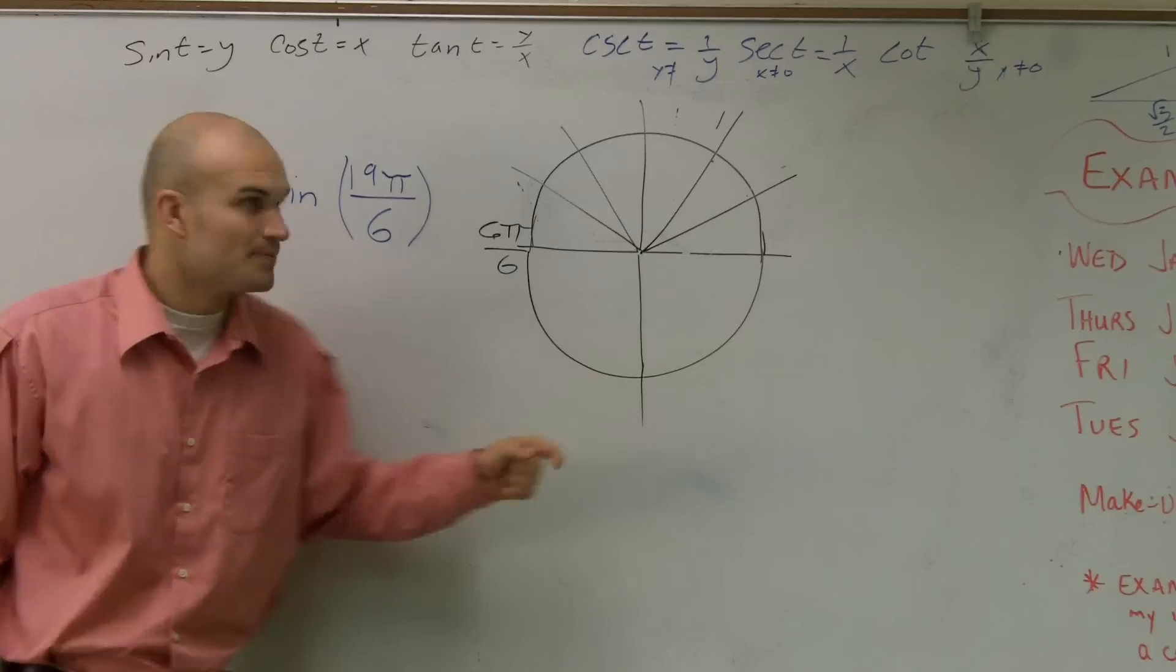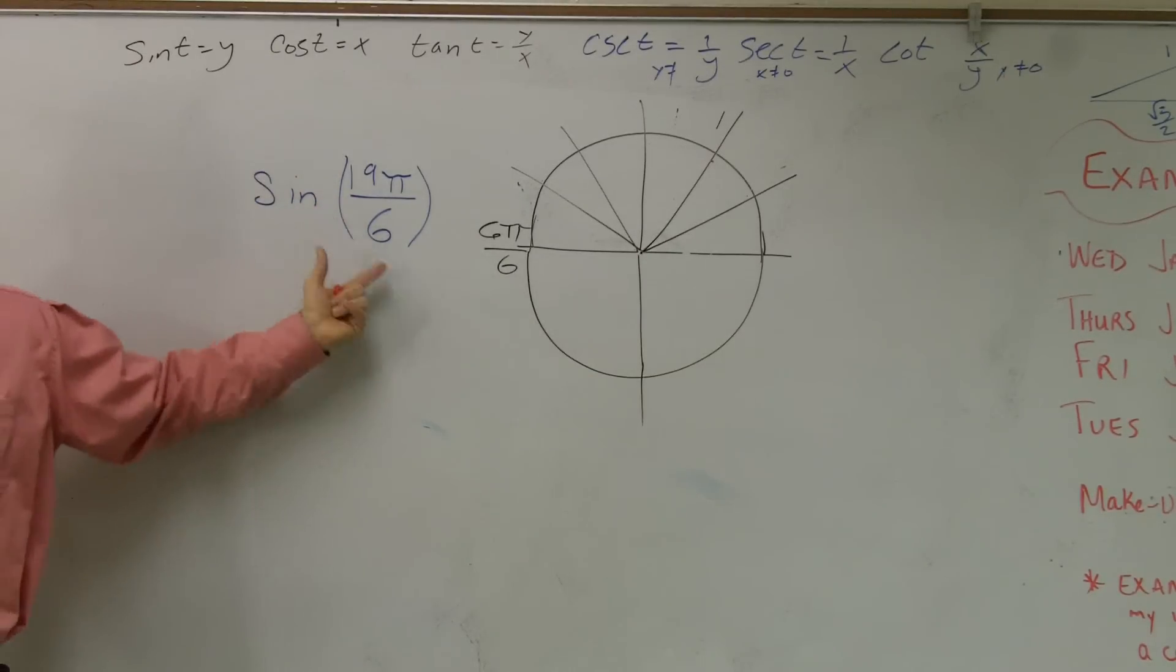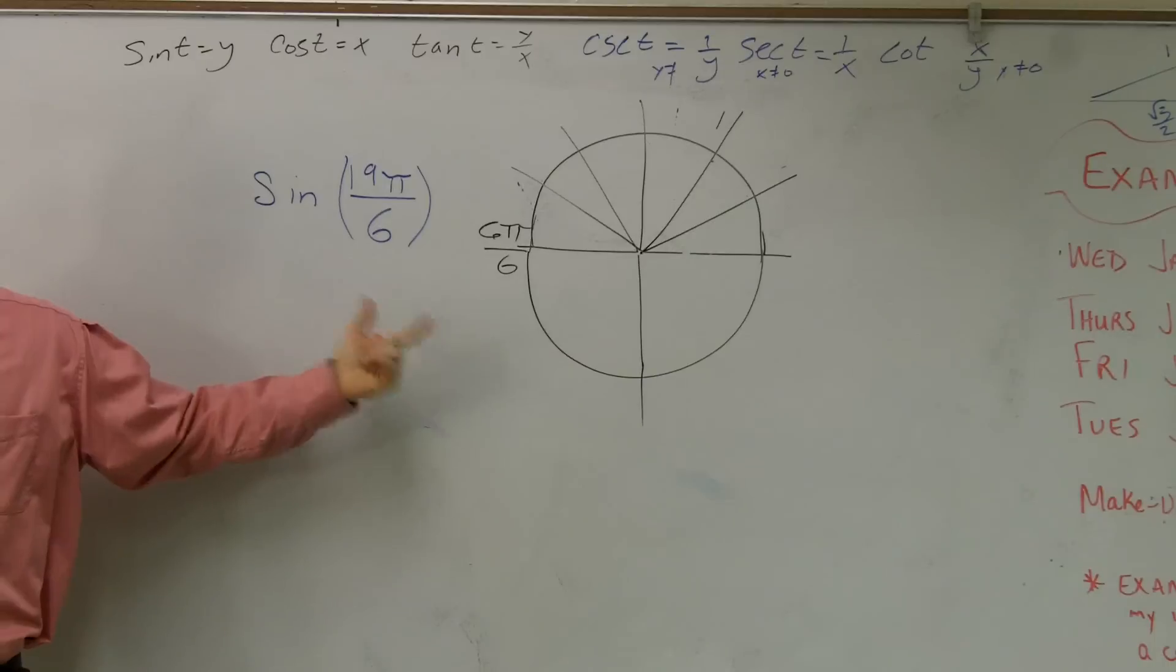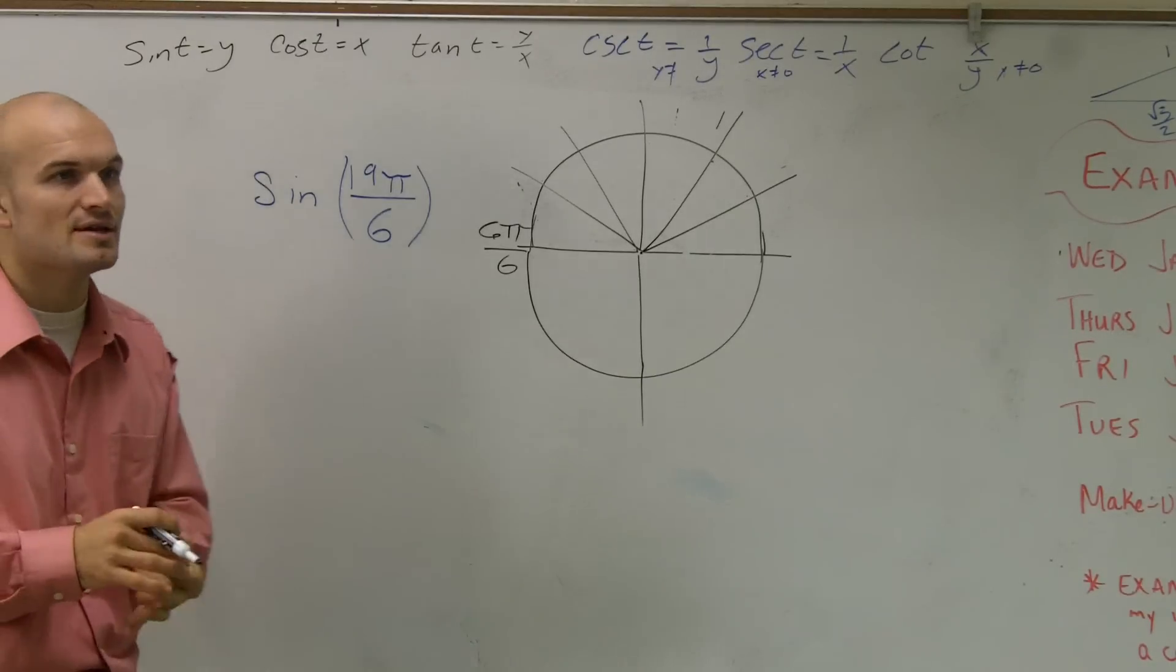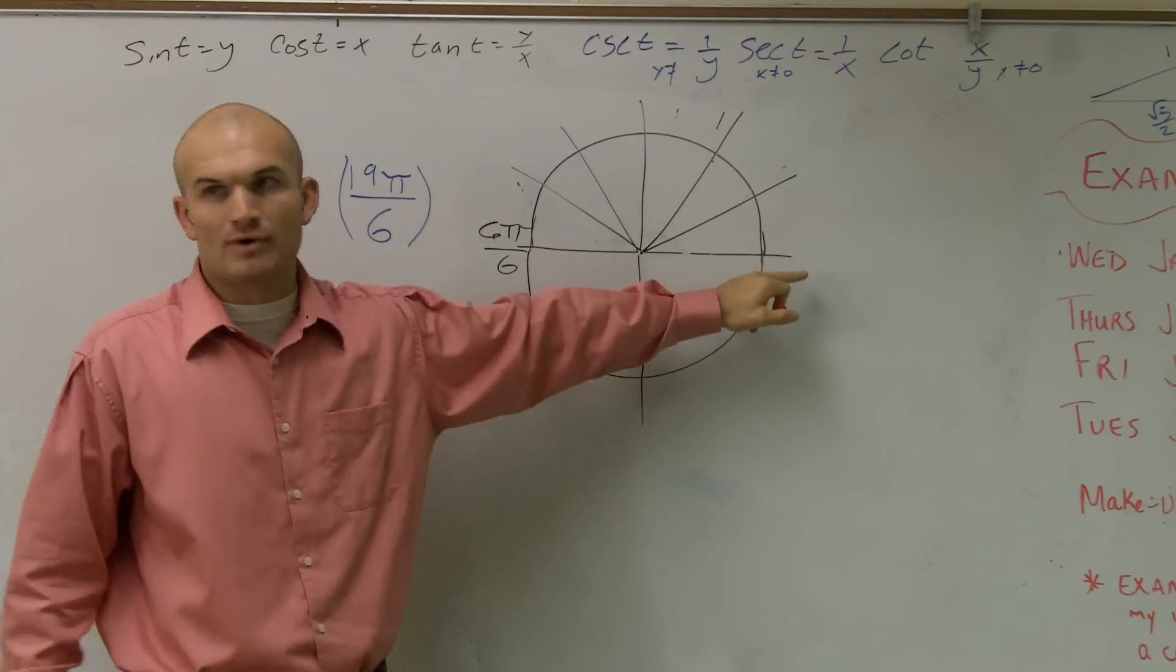And you guys can keep on going around the circle all the way until you find out where 19π over 6 is. Then you have to find the coordinate point for that. However, what I want to show you is, if you guys notice, when I go all the way around the circle, I get back to where I started.